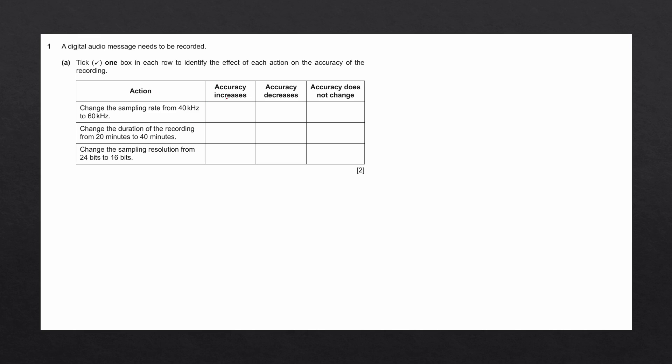To answer this question, we need to understand what accuracy of the recording means and how it can be affected. The accuracy of a recording can be defined as how well the recorded sound matches the original sound that was being recorded.